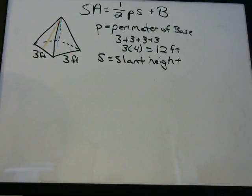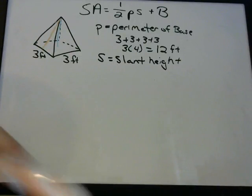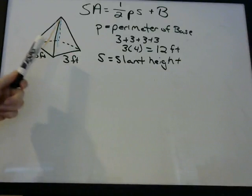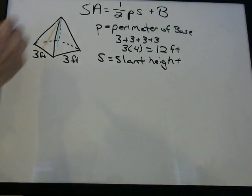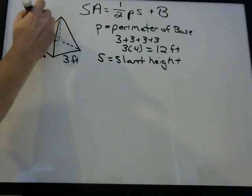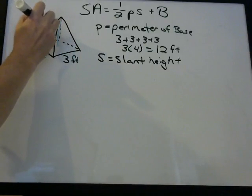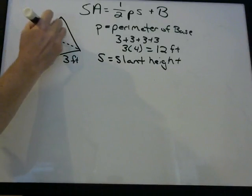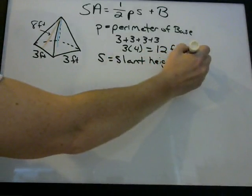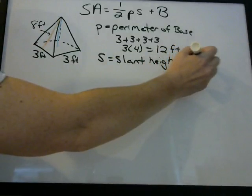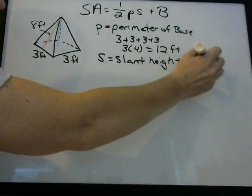Make sure when you do the problem you're using the slant height, not the height, because they may give you the height just as a distractor. Let's say here the slant height is 8 feet — that's just given.